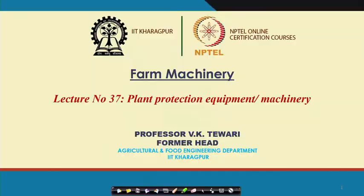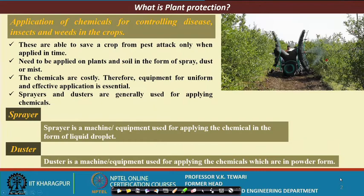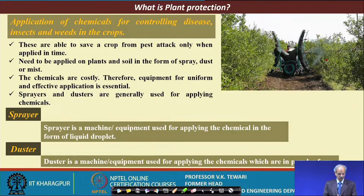What is plant protection? A photograph has also been shown here which shows a device developed at IIT Kharagpur for pomegranate. We will talk of this slightly later — this is the device which has been developed at IIT Kharagpur and then tested at a location in Maharashtra. We are trying to save the crop from pest attack.